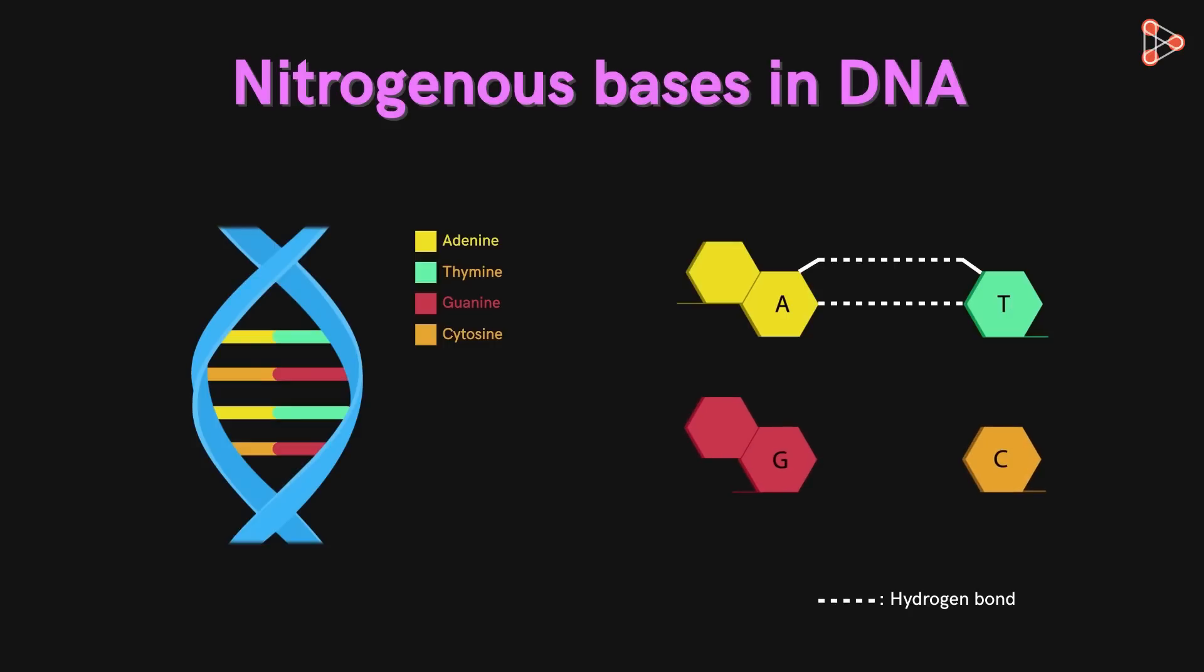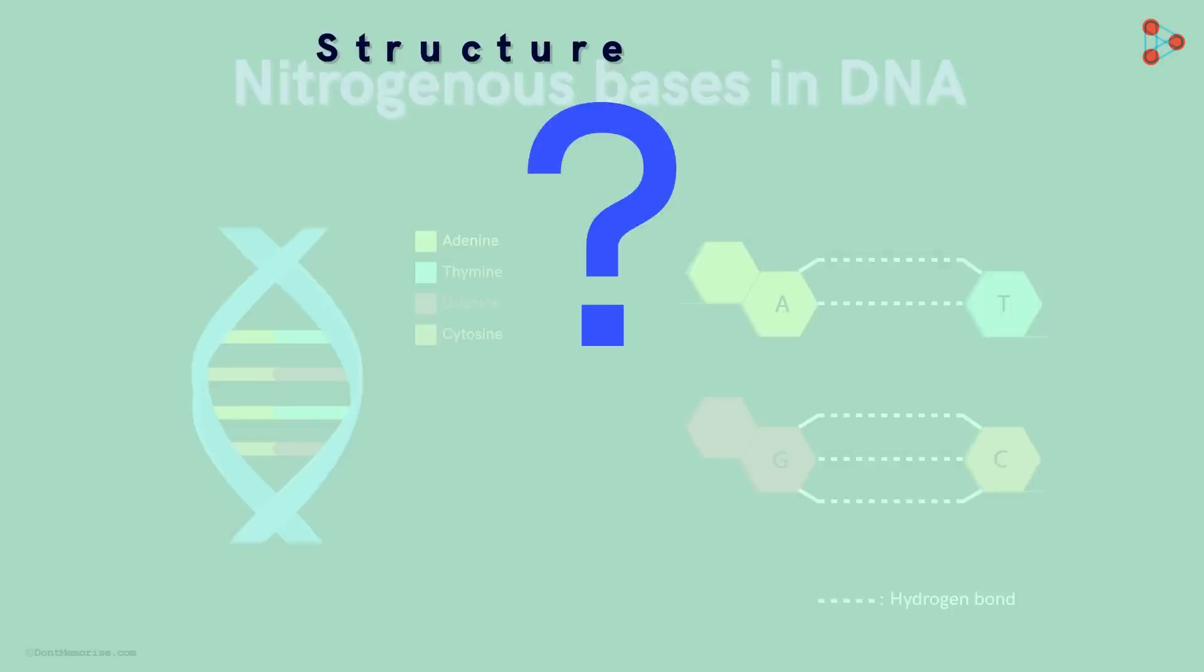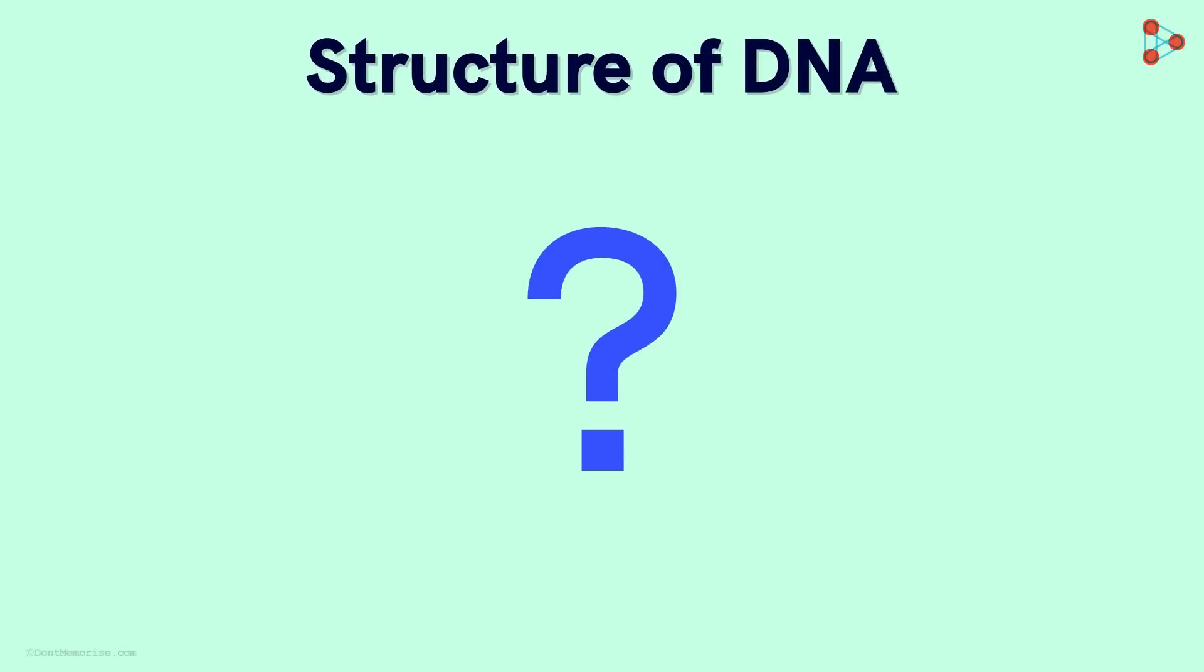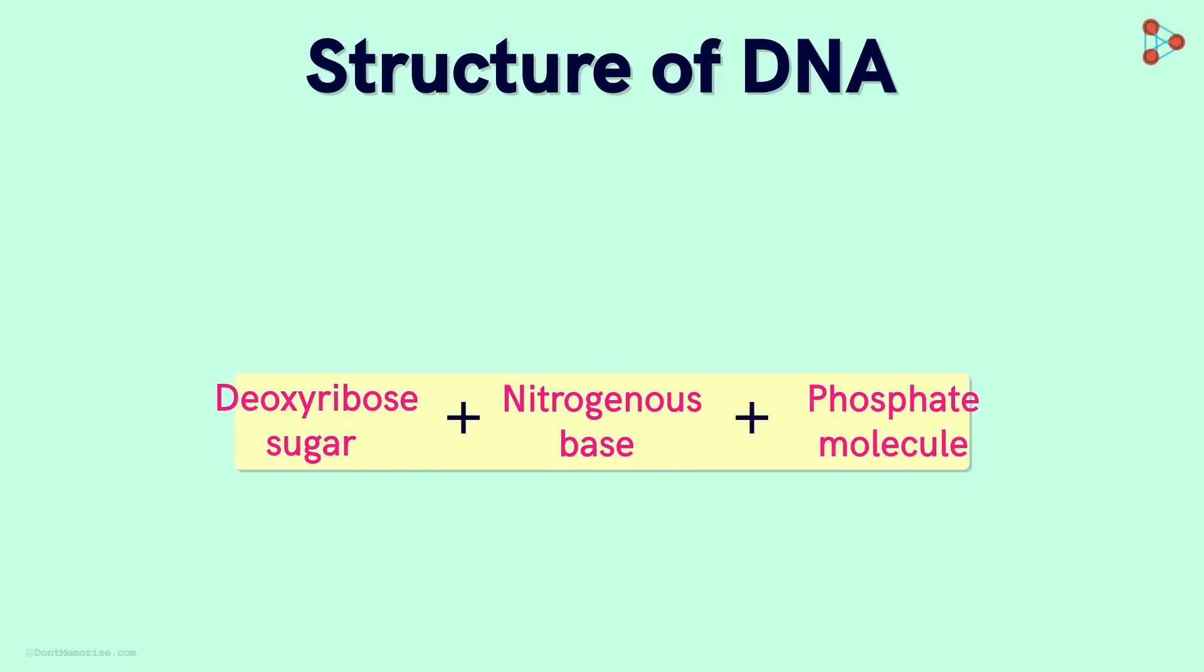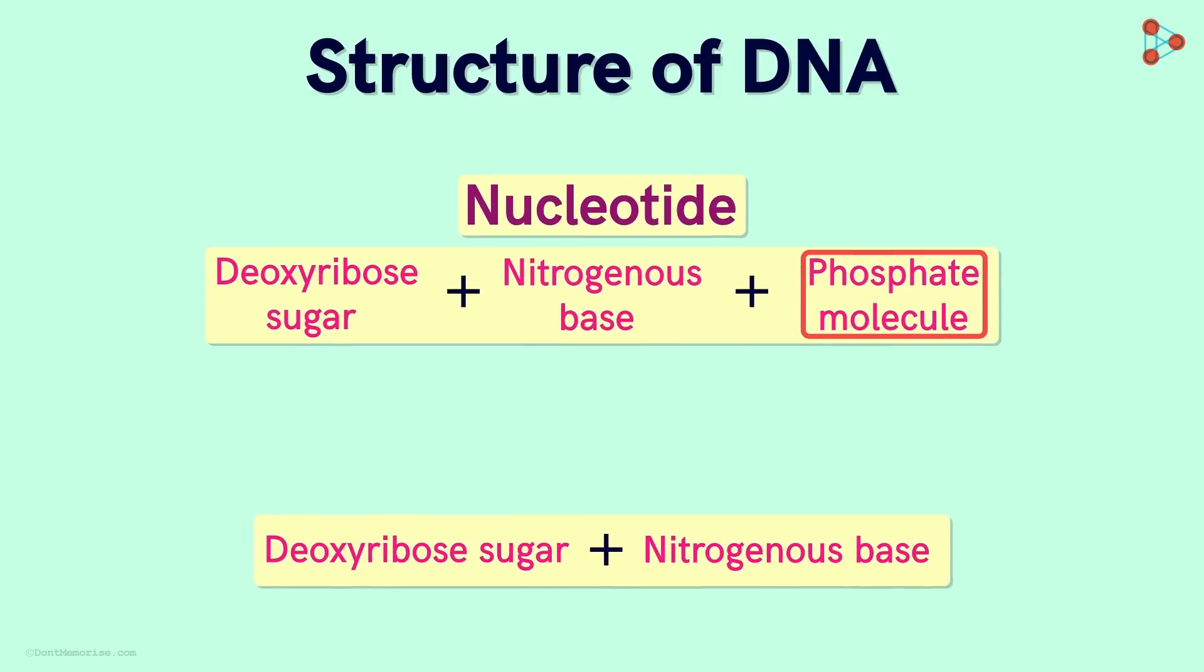Guanine and Cytosine however bind with three Hydrogen bonds. Did you know that one unit consisting of Deoxyribose molecule, one Nitrogenous base and a phosphate group is called a Nucleotide? And what if the phosphate group is removed from this Nucleotide unit? It is called a Nucleoside then!